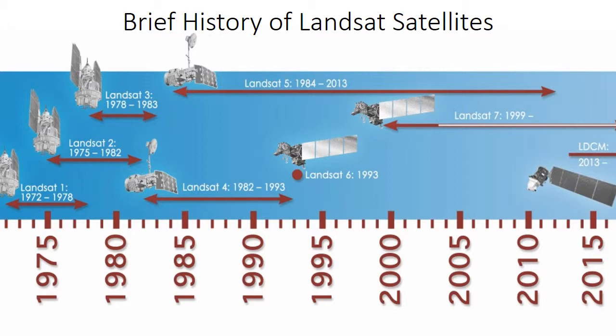First off is a brief history of the Landsat satellites. It shows all the satellites that are currently up in the air. They're no longer receiving data from Landsat 5, but Landsat 7 and Landsat 8 are up there collecting data and sending information down. So this project has been going on for a really long time.